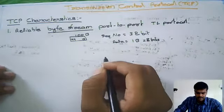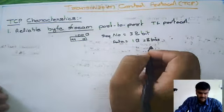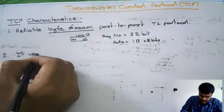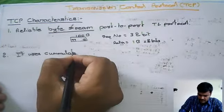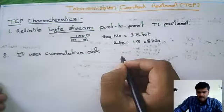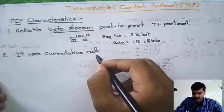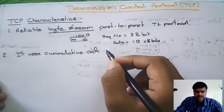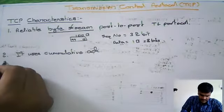So that is one of the major characteristics of TCP. The second one is: it uses cumulative acknowledgement. TCP is going to give the acknowledgement for a group of packets — either every unit of time or for every group of packets received. That is another characteristic of TCP.